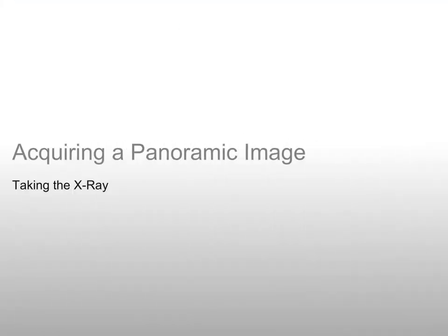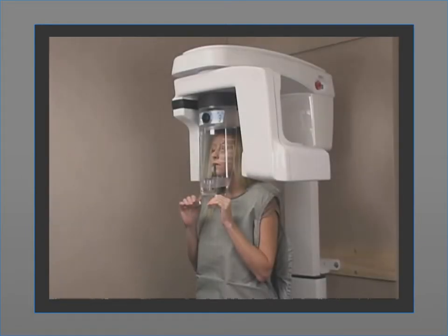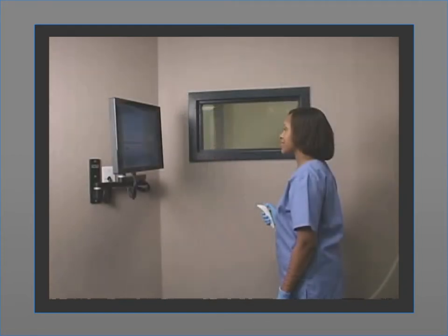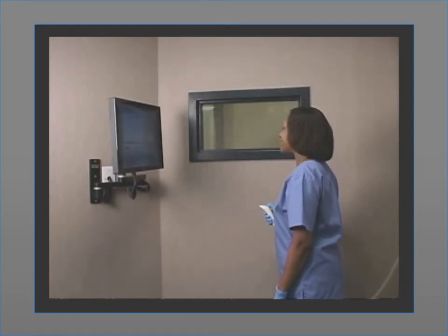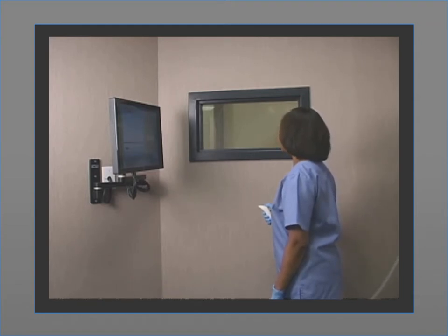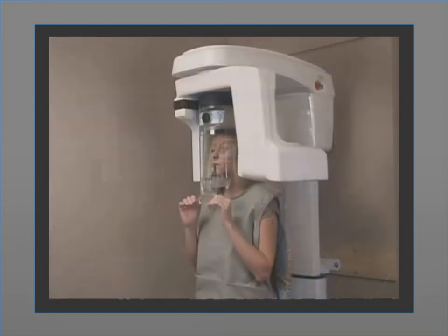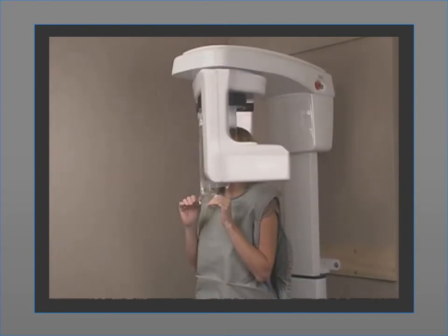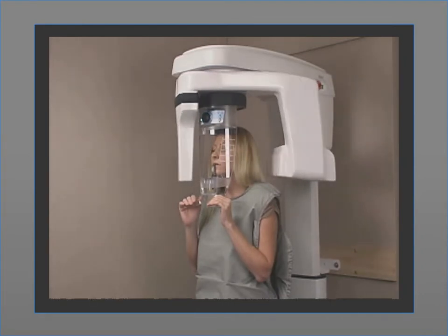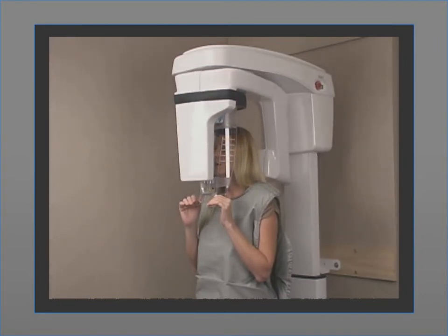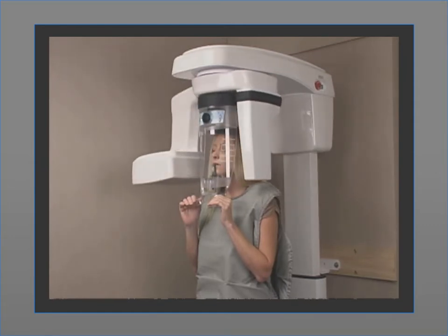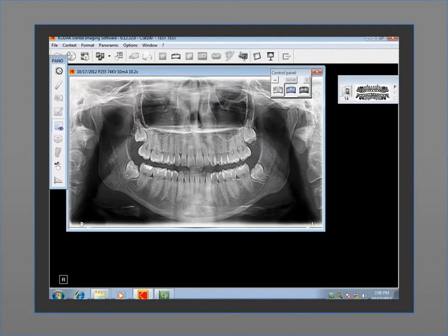Acquiring a panoramic image — Taking the x-ray. The third step in acquiring an image is to take the x-ray. Launch the x-ray acquisition and complete the examination. To launch the x-ray acquisition, first exit the room and maintain visual contact with the patient throughout the duration of the exposure. Launch the x-ray with the remote control — simply press and hold the exposure button until the end of the acquisition is indicated by the on-screen release switch message. The x-ray exposure indicator turns yellow and a warning sound is heard during x-ray emission. When the acquisition ends, the acquisition interface disappears and the acquired image is automatically transferred to the imaging window.